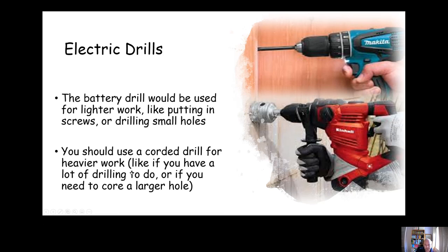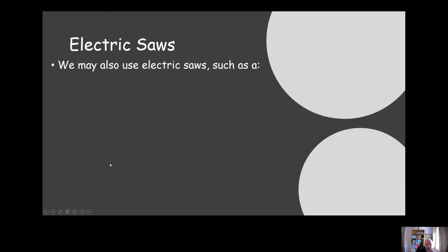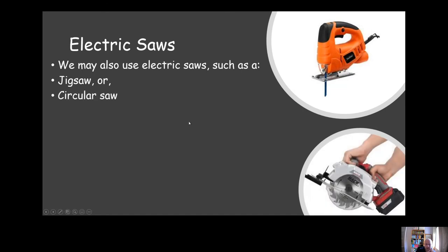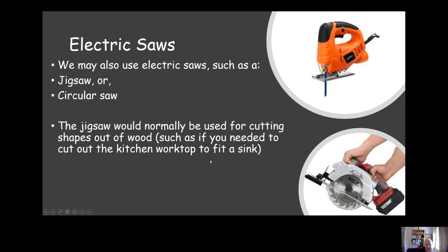Electric saws - can look briefly at these. Jigsaw, this is one at the top right, you'd use for cutting shapes, for example out of a kitchen worktop. Or a circular saw like the one we've got shown in the bottom right here which we'd use for cutting wood basically. You might use it for lifting floors, cutting along the feathered edge in the tongue and groove which I'm going to talk about with you guys in the next module.